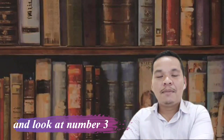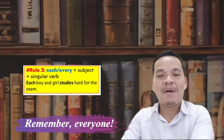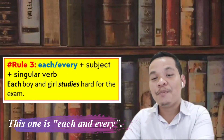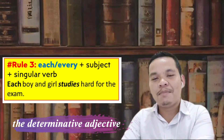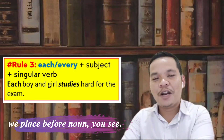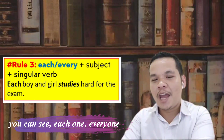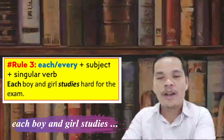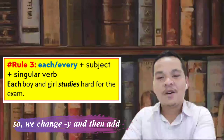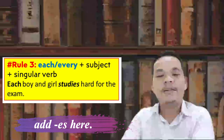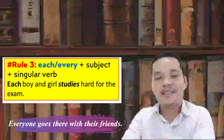Now look at rule number three. Remember this one: 'each' and 'every' are determinative adjectives — adjectives we place before a noun. When you place a noun after these words, we take a singular verb. For example: 'each boy and girl studies' — even though you see 'and' here, because of 'each,' we change Y to I and add IES. So 'each boy and girl studies hard for the exam.'